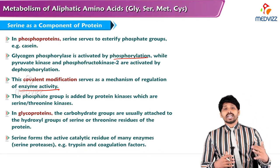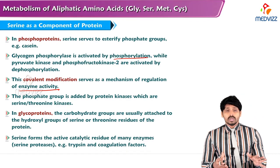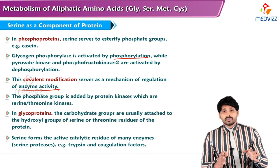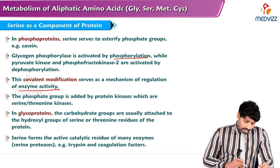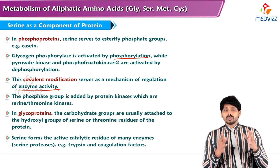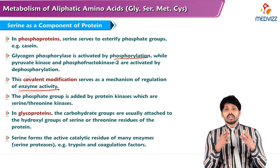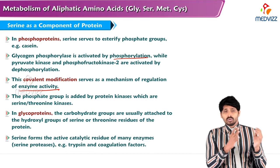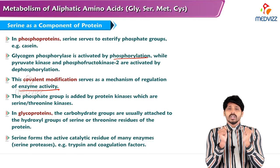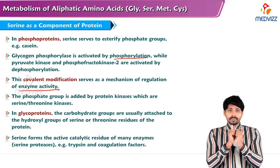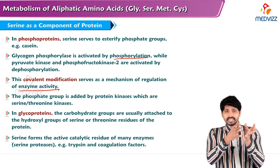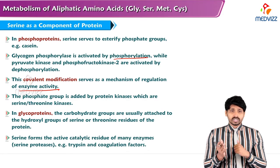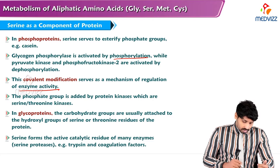The phosphate group is added by protein kinases, which are serine-threonine kinases. So all phosphorylation reactions carried out by protein kinases are serine-threonine based. In glycoproteins, carbohydrate groups are usually attached to the hydroxyl groups of serine or threonine residues of the protein. Whenever there is a combination of carbohydrate and protein, both are linked with the help of serine or threonine because they carry hydroxyl groups.